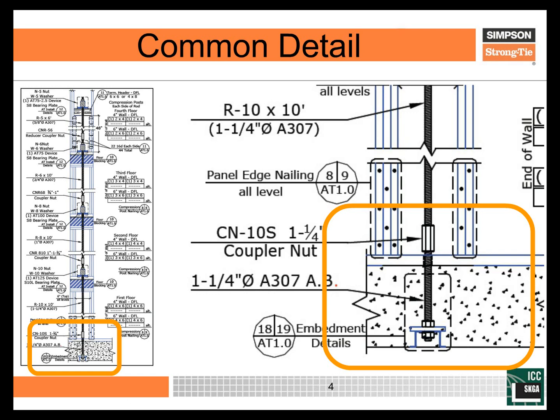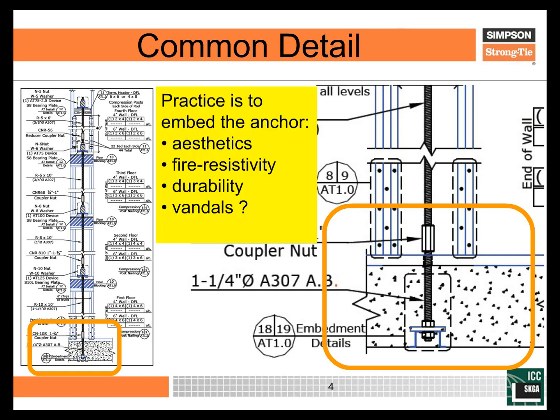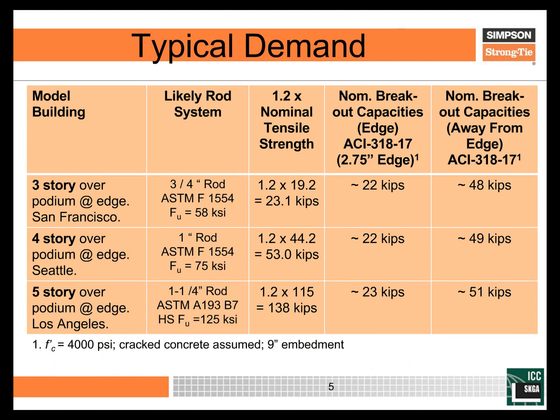There was a termination of that continuous rod system to a cast-in-place anchor bolt, and it was common to put the termination inside the concrete as opposed to below the concrete, so that it could be protected from a number of things that could upset its performance. As calculations were done to get a handle on what kind of demand these situations would develop, we looked at a number of different scenarios — three-story, four-story, or five-story structures over concrete podiums.